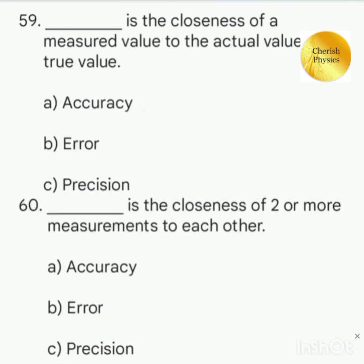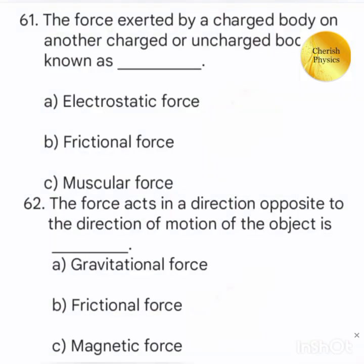Dash is the closeness of a measured value to the actual value or true value. Dash is the closeness of two or more measurements to each other. The force exerted by a charged body on another charged or uncharged body is known as. The force acts in a direction opposite to the direction of motion of the object is.